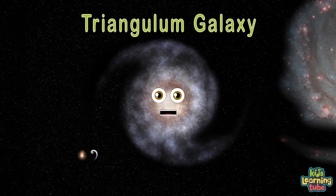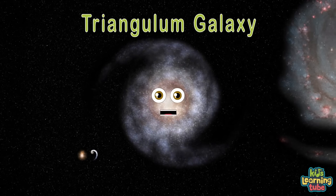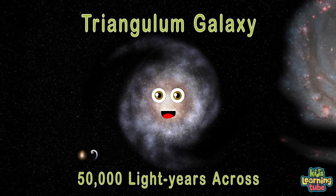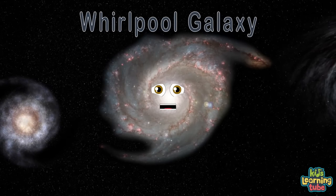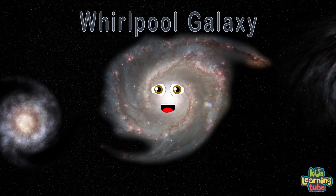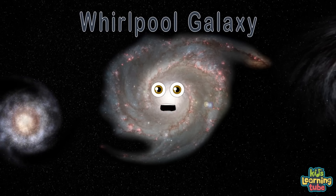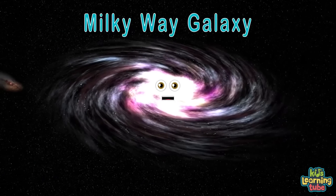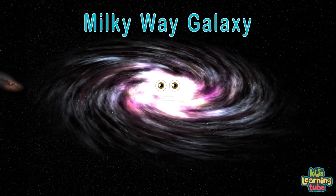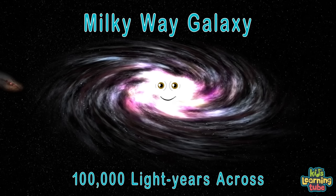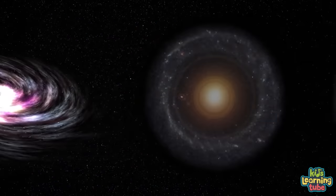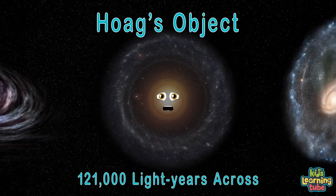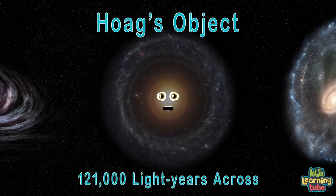I'm the Triangulum Galaxy, a spiral galaxy sometimes called the Pinwheel, discovered officially in 1764 and 50,000 light years across. I'm the Whirlpool Galaxy, also called Messier 51, a spiral galaxy discovered in 1773 and 76,000 light years across. I am the Milky Way Galaxy, a gigantic spiral disk 100,000 light years across with a bright central bulge. I'm Hoag's Object, a ring galaxy 121,000 light years across, discovered by Arthur Hoag in 1958.